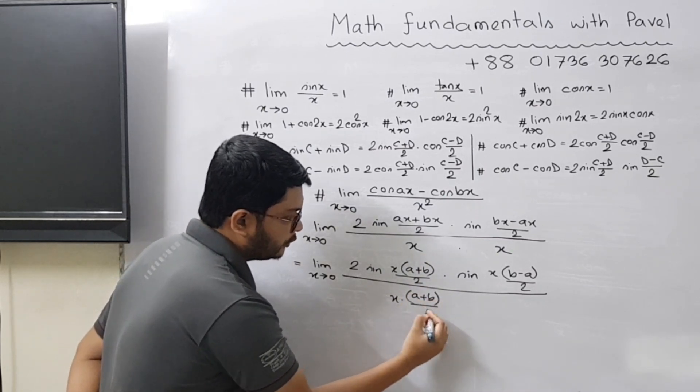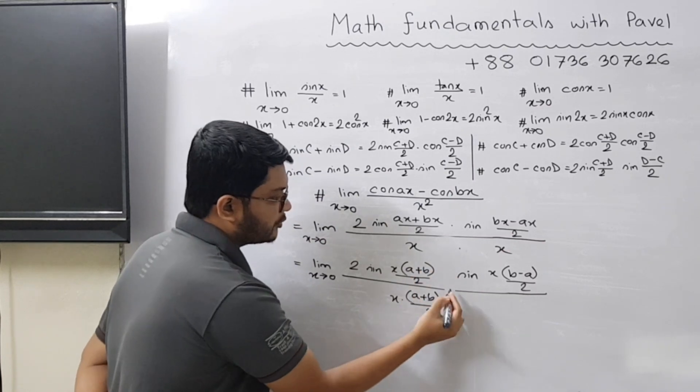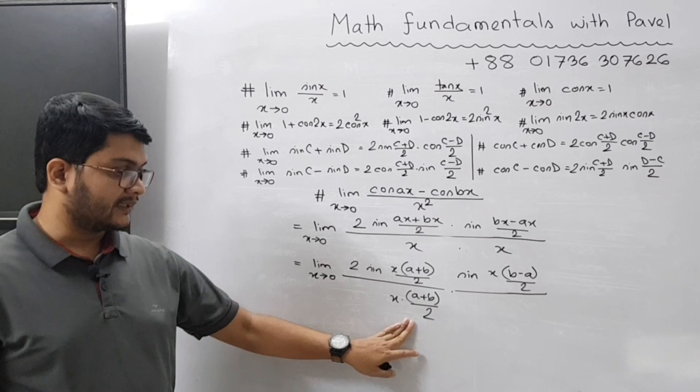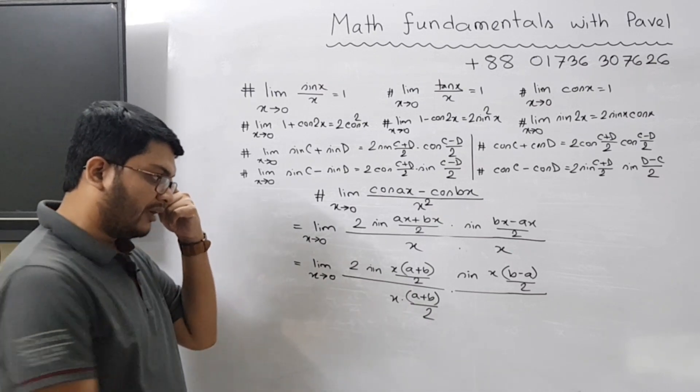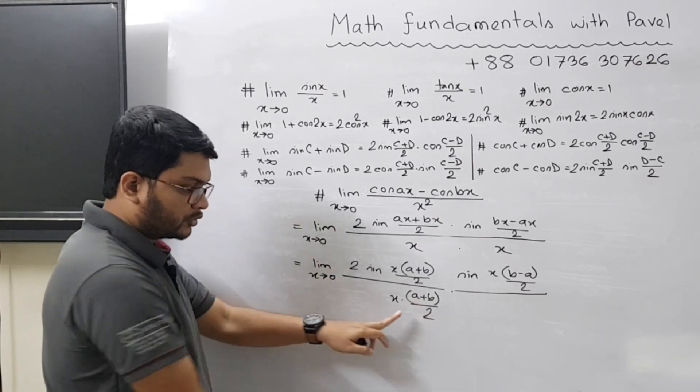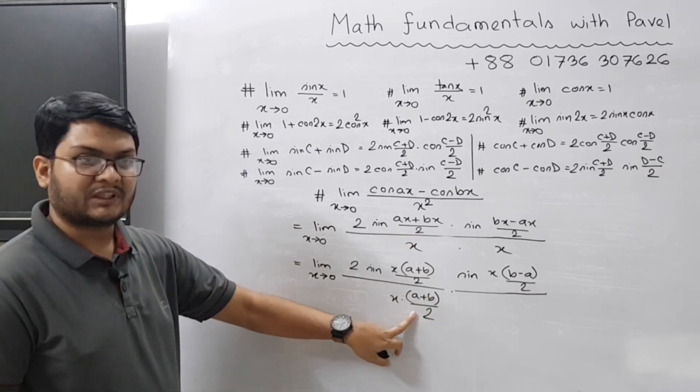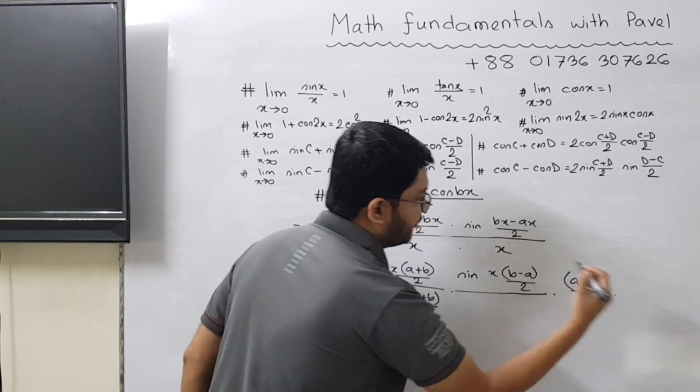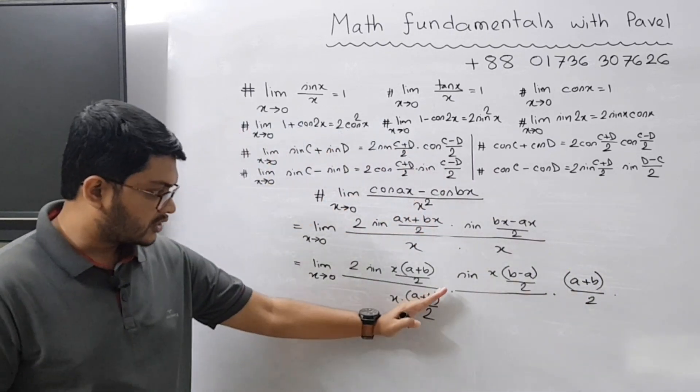So this part is adjusted. You have written extra what part? a plus b by two. So you divided this term with a plus b by two. That's why you should multiply here with a plus b divided by two.